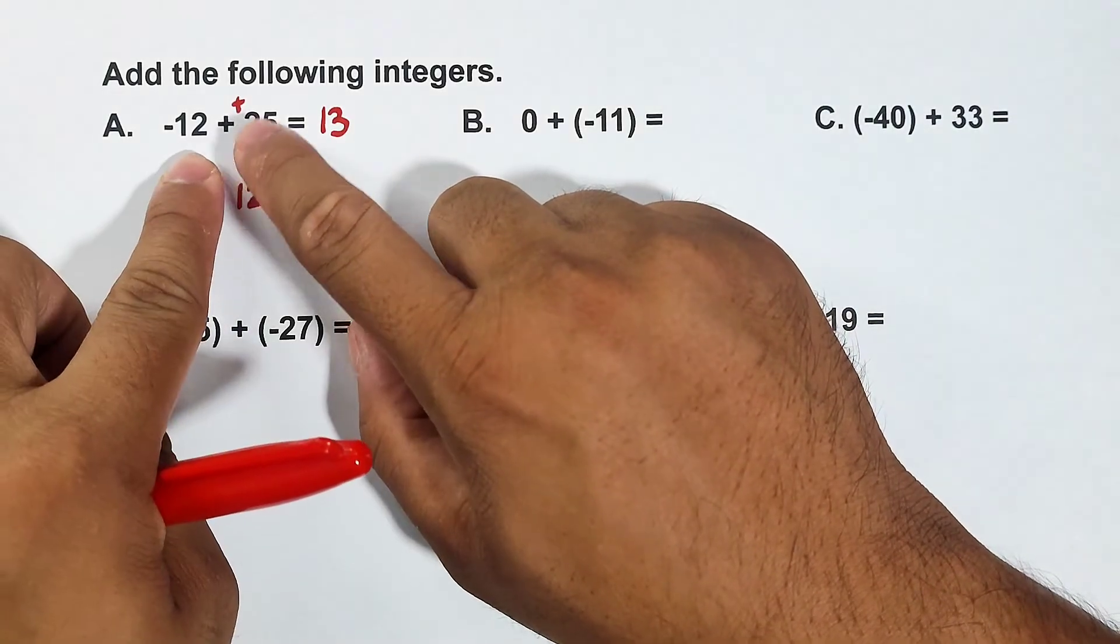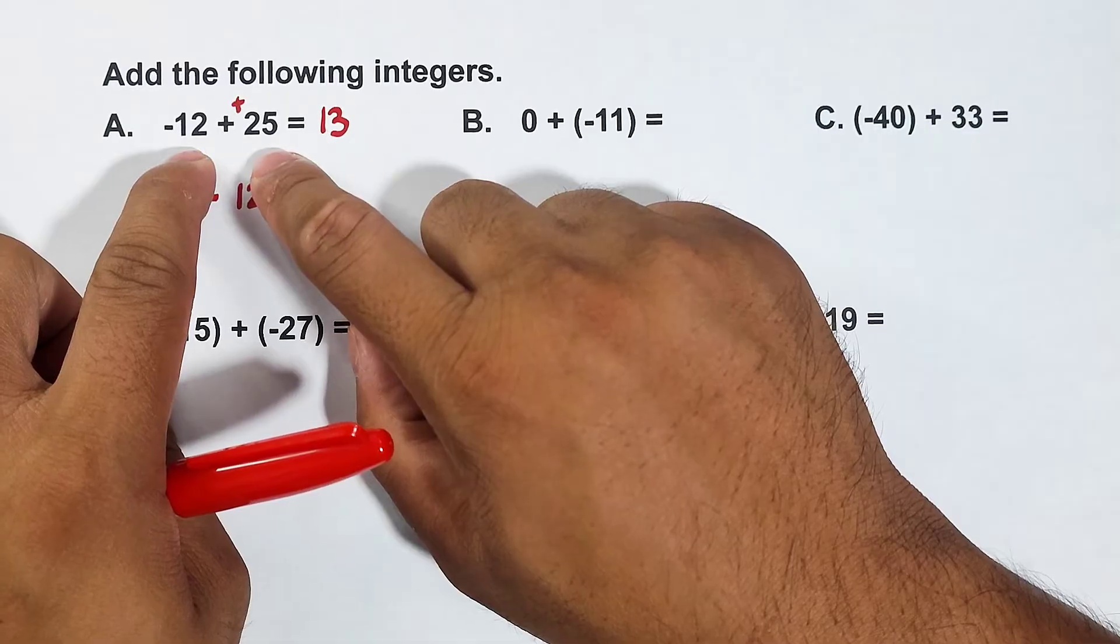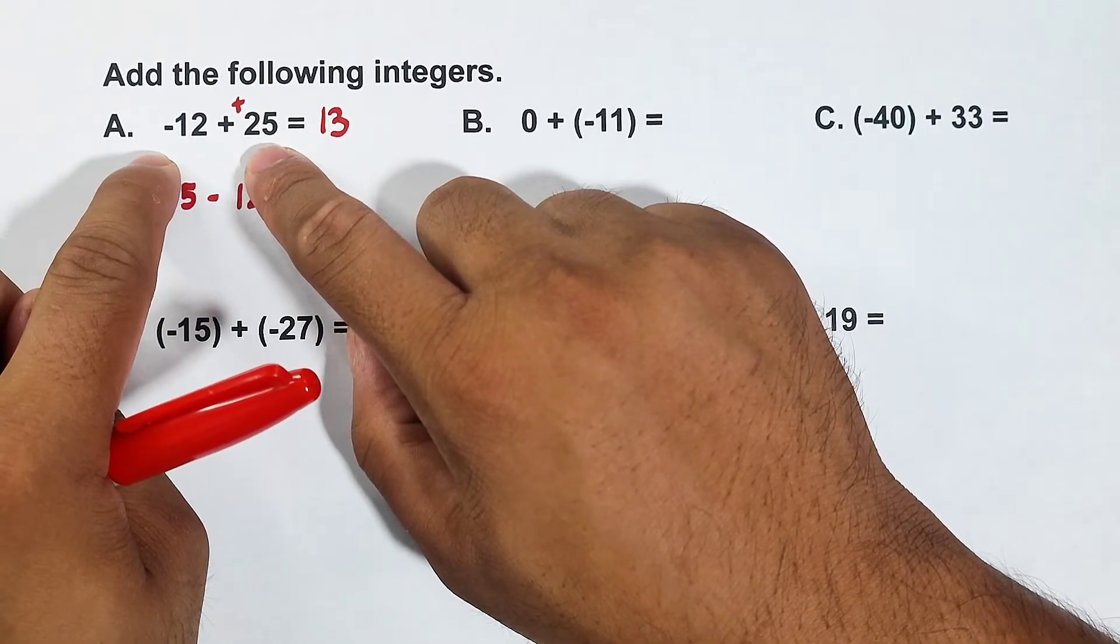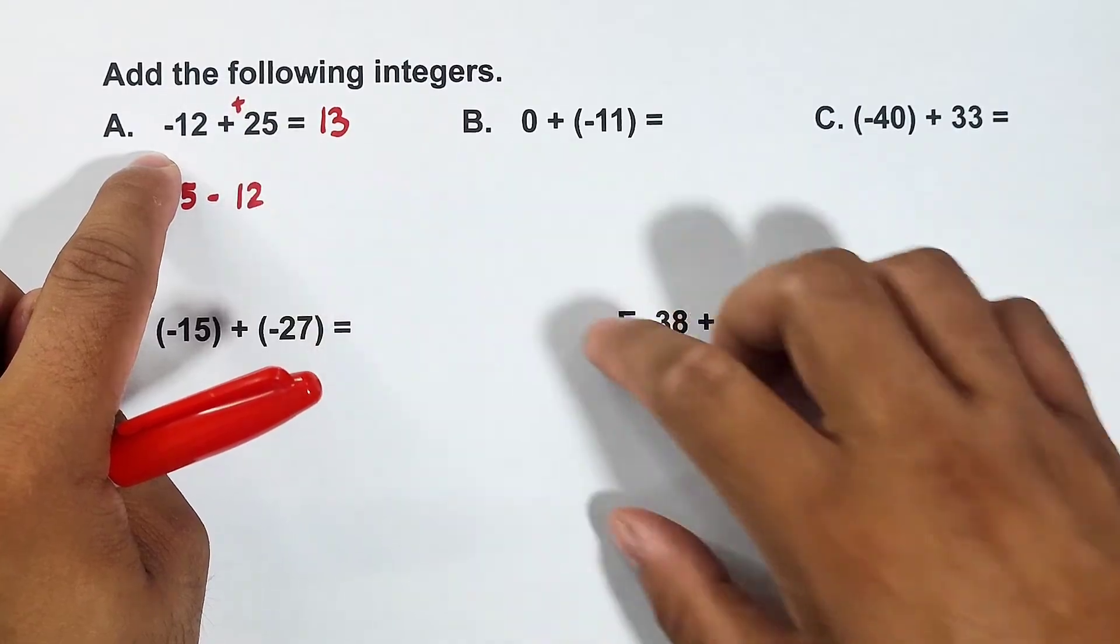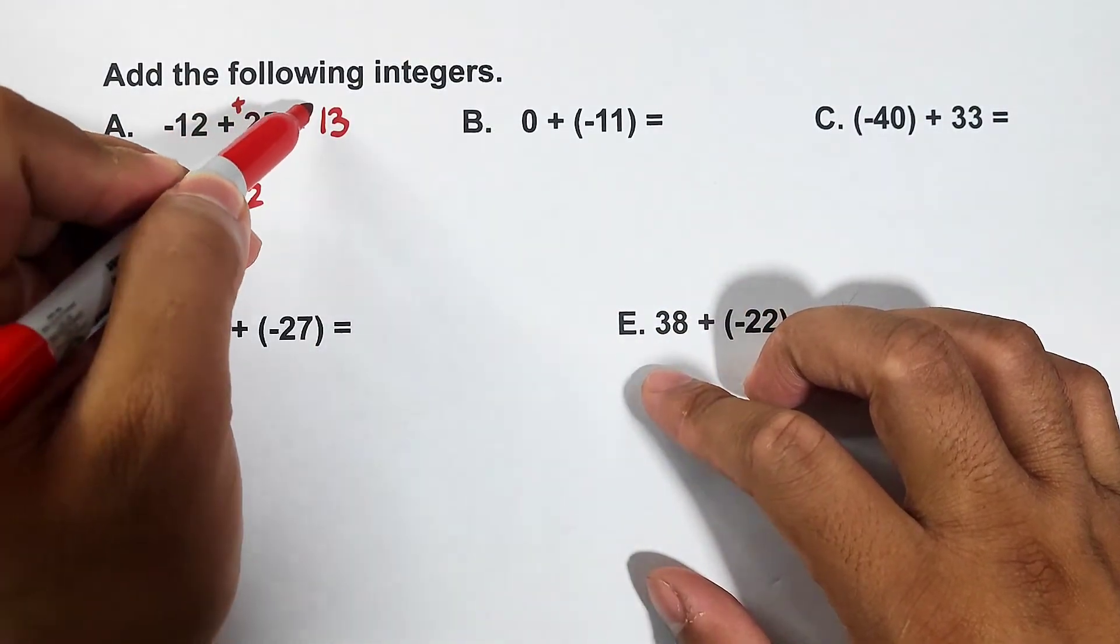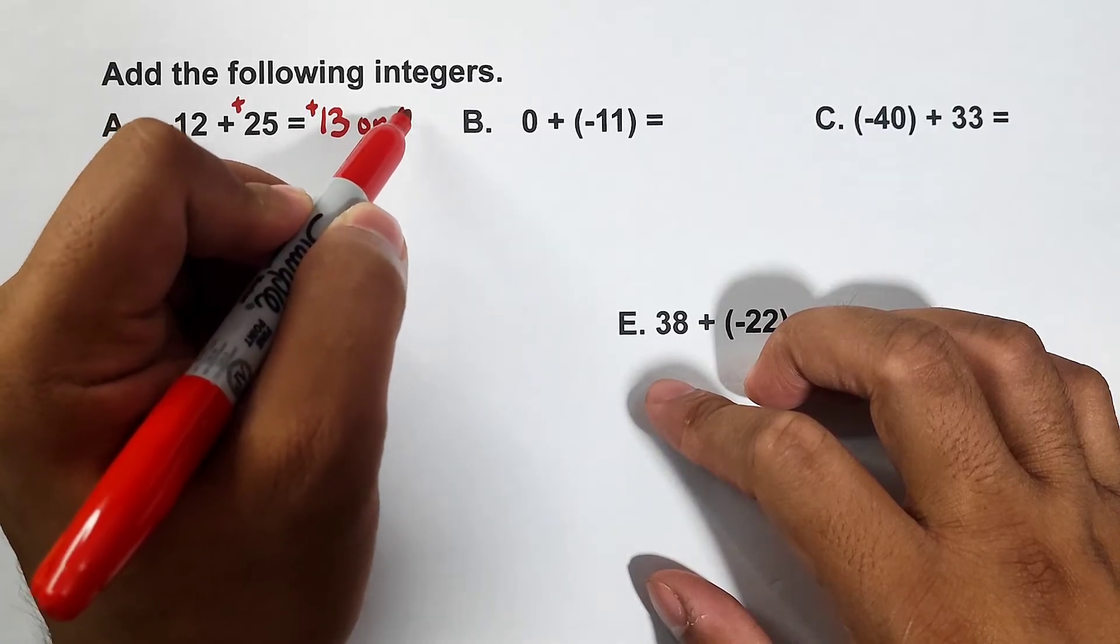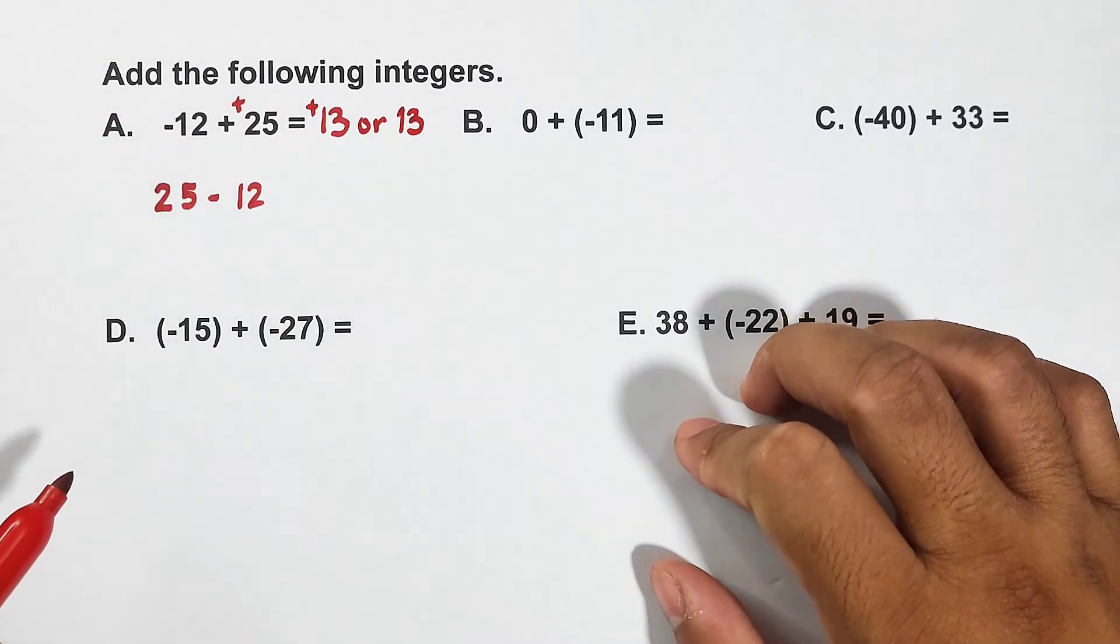Now it's time for you to decide which sign we will use. Is it positive or negative? Look at these two. Which one has the greater absolute value? Is it the 25 or negative 12? Definitely 25. So we will copy the positive sign. So this is positive 13 or simply 13.